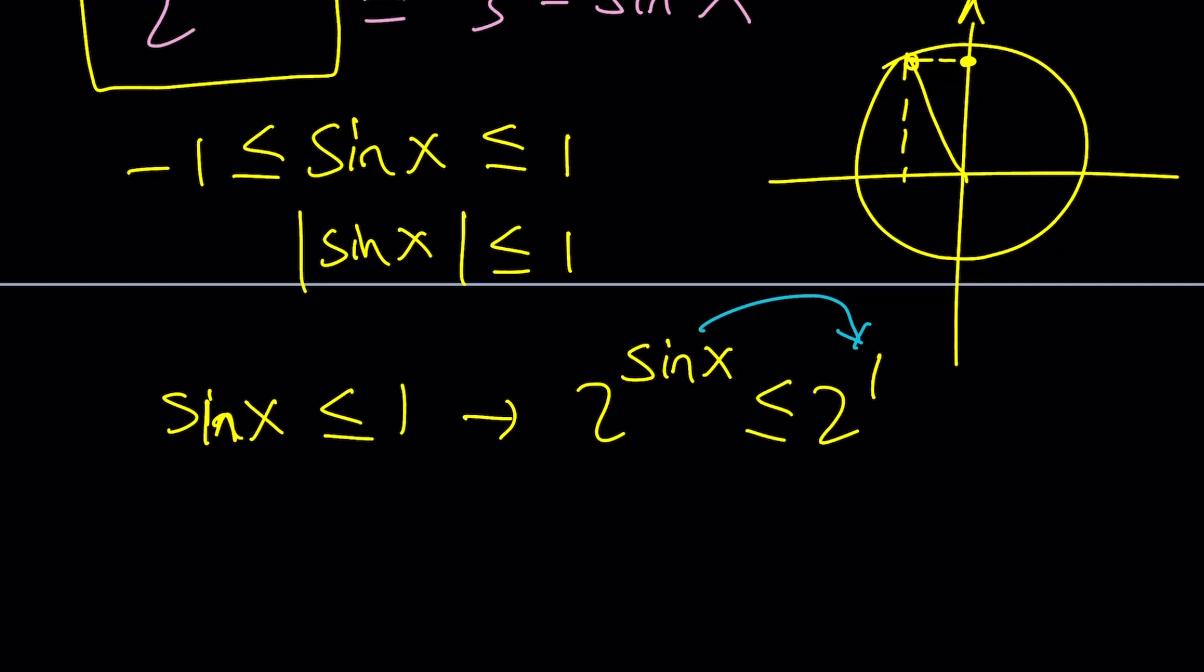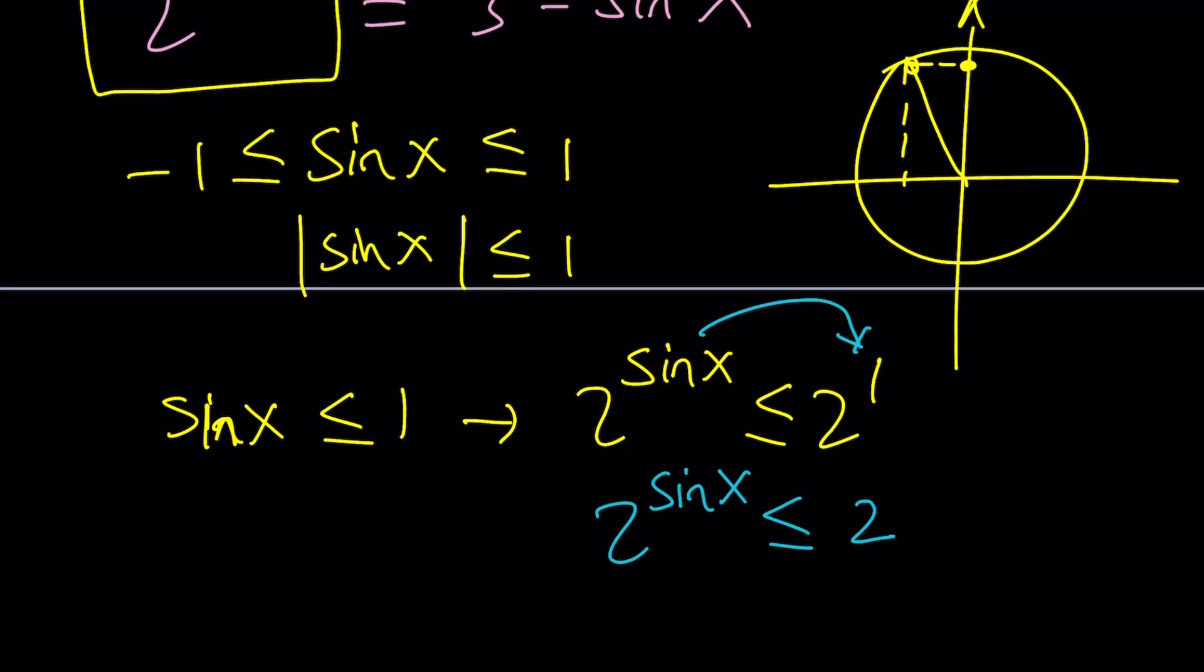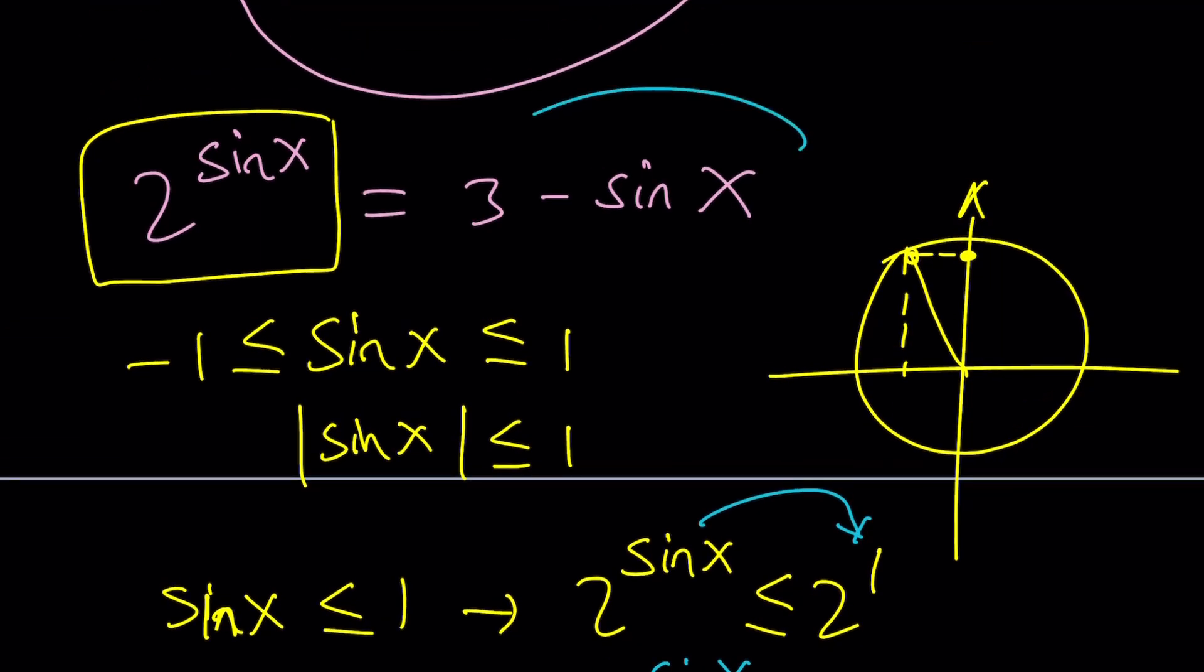If sine x is less than or equal to 1 which means that's the maximum value, then 2 to the power sine x must be less than or equal to 2 to the power 1. Because this is when sine x is maximized. And 2 to the power something is definitely an increasing function. Therefore it's just going to preserve the inequality. Make sense? So what did we get? We got 2 to the power sine x is less than or equal to 2.